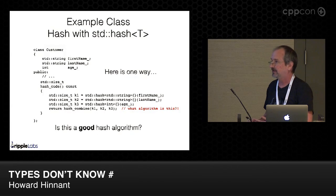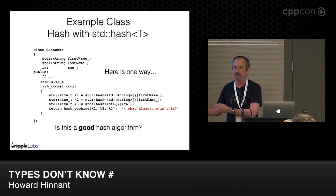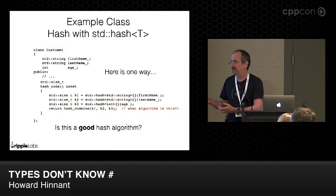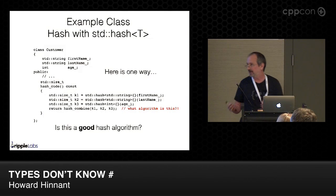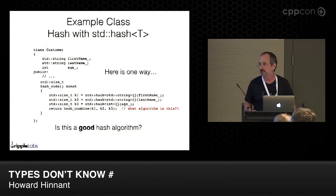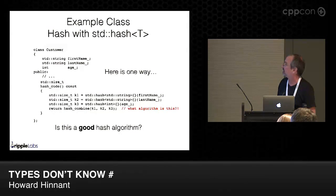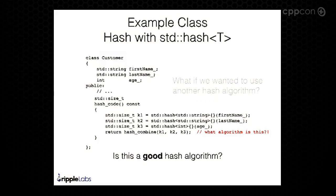Is this a good hash algorithm? Well, we don't really know what hash_combine is doing, and so we really don't know, besides testing, if this is a good hash algorithm. You might test it and discover this is my sample data set and it's colliding this amount of time — is that good or bad? The only way to really tell is to try a different hash algorithm and see if your number of collisions goes up or down.